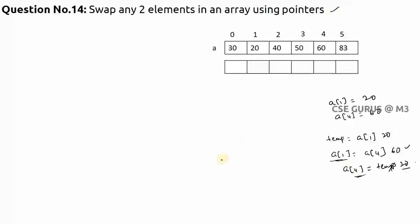Now the question asks how to do this using pointers. You can create a pointer variable, or even without a separate pointer variable you can do it — because in C, arrays are one type of pointer.